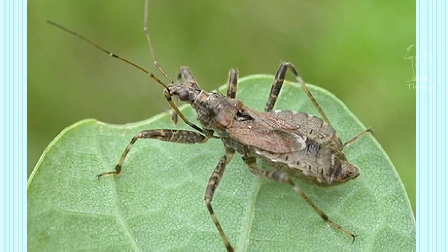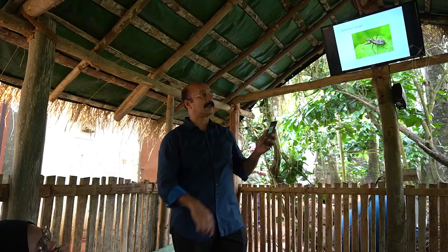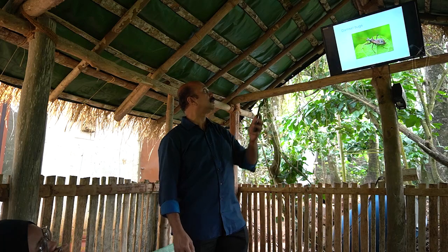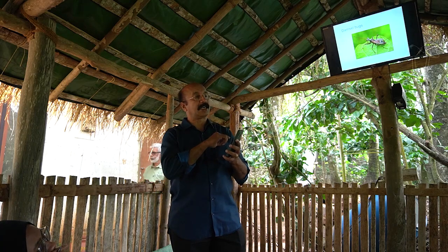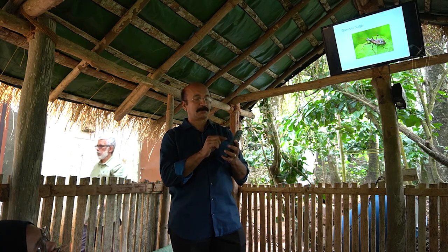This is the damsel bug — same job of regulating insects, but not as aggressive. It will not prick human beings at all. It is actually a better hunter than the assassin bug.